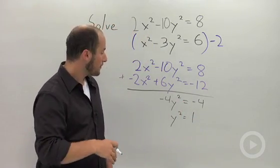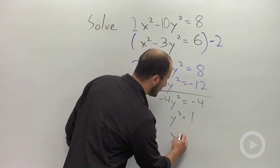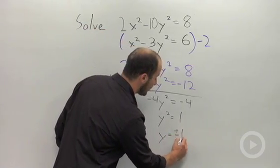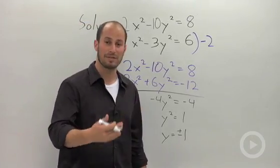So finishing this up take the square root of both sides. We end up with y equals plus or minus 1. Remember when you use the square root as a tool we have to include the plus or minus.